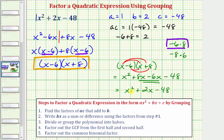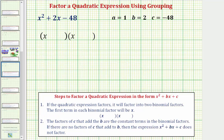Now let's talk about a different method that relates to factor by grouping, for quadratic expressions with leading coefficient a equals one. When we have a quadratic expression in the form x squared plus bx plus c with leading coefficient one, if it factors, it will factor to two binomial factors where the first term in each binomial factor is x, because x times x equals x squared. Since a equals one, we only need to consider the value of c, not ac.